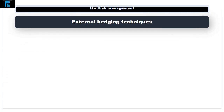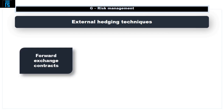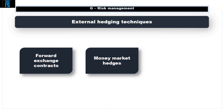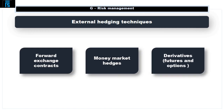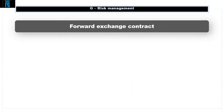Let's now consider some external hedging techniques. These involve contracting with third parties to help manage our risk. We'll consider forward exchange contracts, money market hedges, and the use of derivatives such as futures and options.